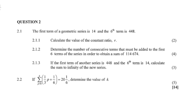This is Question 2. Take note of the mark allocation: 14 marks. The first term of a geometric series is 14 and the sixth term is 448. You must calculate the value of the constant ratio for 2 marks.